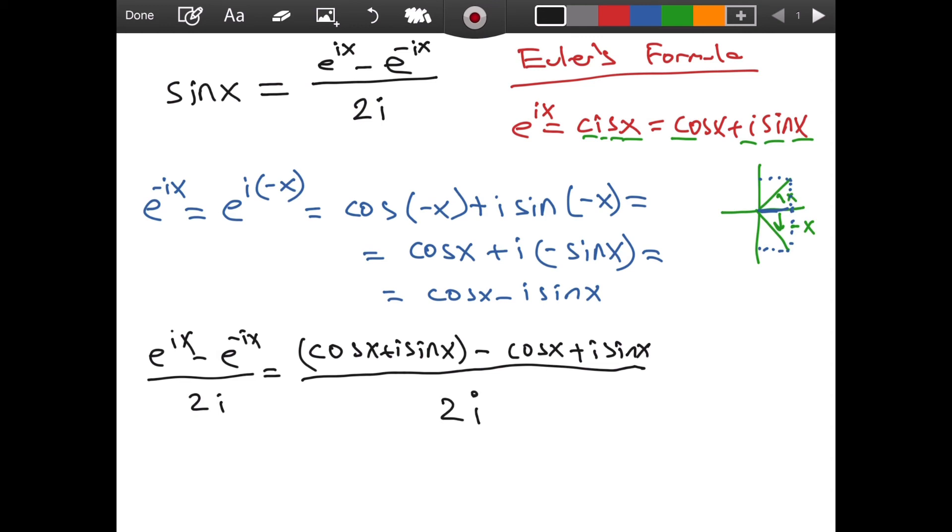Well, in this case, what do we see? We see that cosine of x cancels here. This is great. And then we will have 1i sine of x here and another one here. So 1 plus 1 is 2. We have 2i sine of x divided by 2i.